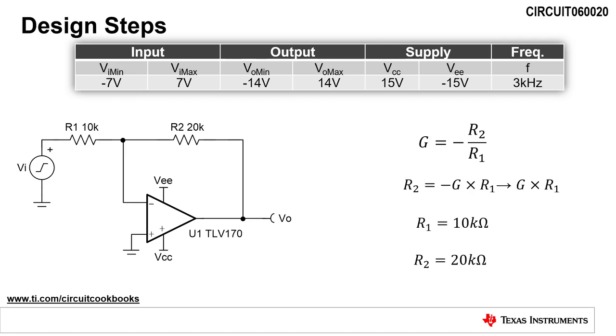The next step is to calculate resistors, R1 and R2. These resistors set the gain, which is equal to negative R2 divided by R1. Rearranging the equation to solve for R2, we get R2 is equal to the gain times R1. Notice we drop the negative sign, because R2 cannot be negative. Selecting R1 as 10 kilo-ohms allows us to calculate the value of R2, which is 20 kilo-ohms.